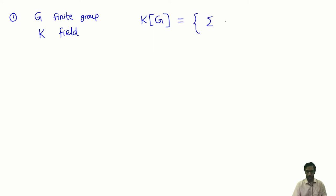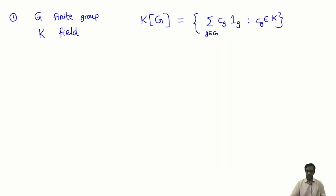It is all elements of the form some linear combination, some coefficients C_G with some basis elements 1_G. You can think of it as a vector space over the field K, where C_G is coming from scalars K. But the interesting thing, as we saw, is that this is a ring — it has multiplication. If I take two basis vectors 1_G and 1_H, they multiply to give me the element 1_{GH}. So this is a ring.